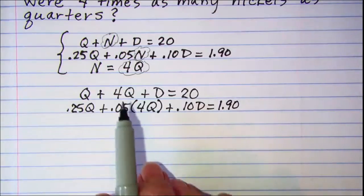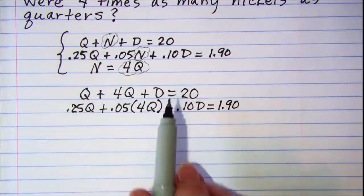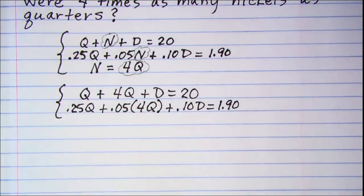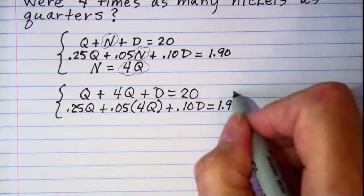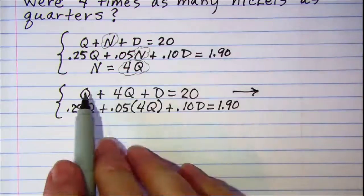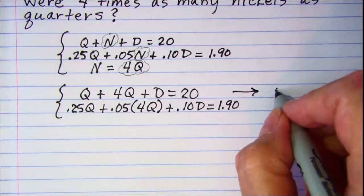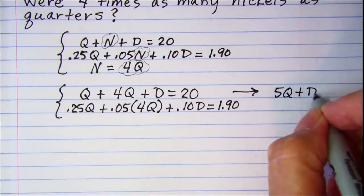Now I've reduced the number of variables to two, I either have Q or D, so I have two equations and two unknowns. I'm going to simplify this equation. I can add Q plus 4Q, that's 5Q, and then copy the rest of it.